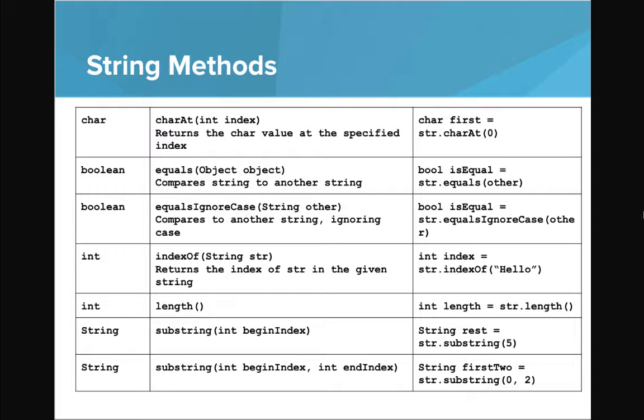So the format of this table is important. So on the left in that left column is the return type. What does the method give back? And in that middle column is this method signature from earlier. Remember, it's the name of the method and parameters lists. And then in the right column, we have an example of how to use it.